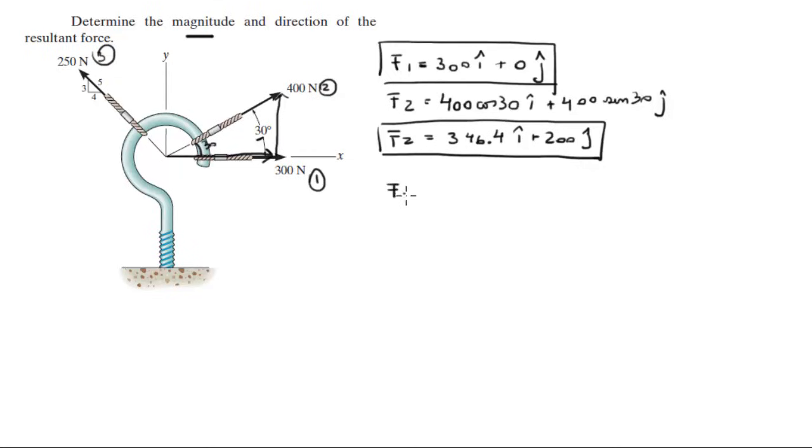F3: 250 is equal to 250 negative times 4 over 5 in the i, plus 250 times 3 over 5 in the j.